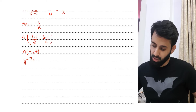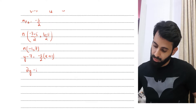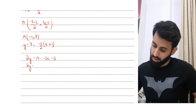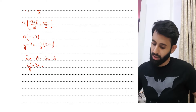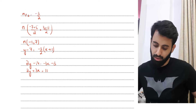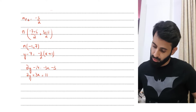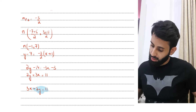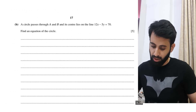Plugging into the equation y - y₁ = m(x - x₁) with gradient -3/2 and point (-1, 7): 2y - 14 = -3x - 3. Bringing 3x to the left and -14 to the right gives 3x + 2y = 11, which is our final answer for Part A.